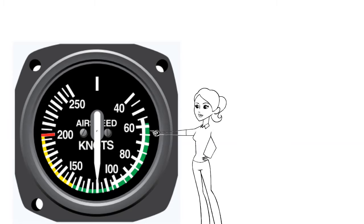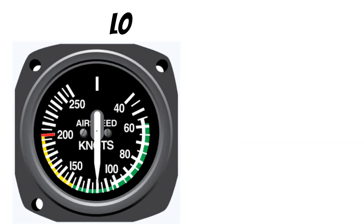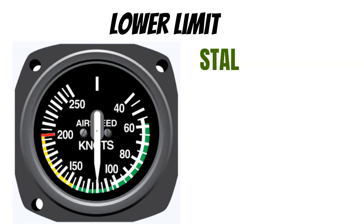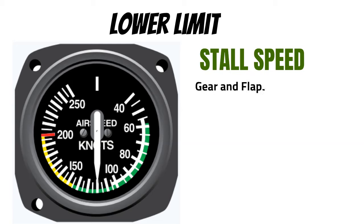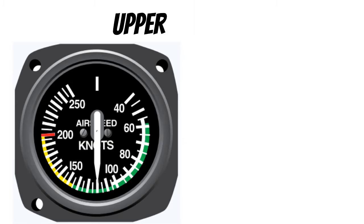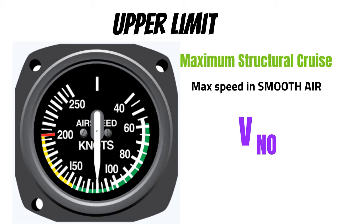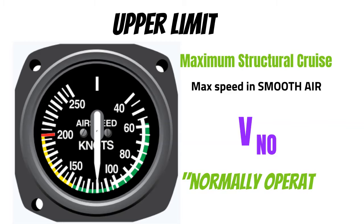Now let's look at the green arc, which is our normal operating range. On the lower limit of the green arc, we have stall speed with gear and flaps retracted. This V-speed is VS1 — remember it as 'stall with stuff in.' On the upper limit of the green arc, we have VNO, our maximum structural cruise speed. This is the fastest we want to fly in smooth air. Remember: normally operate at this speed.